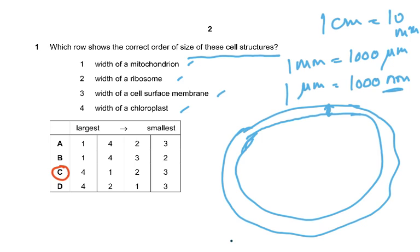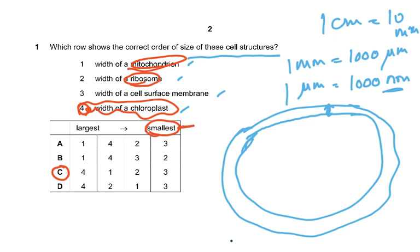The answer is C because the chloroplast is the biggest, then the mitochondrion, then the ribosome, and the cell membrane is the smallest in width. So cell membrane width was the smallest — that is what made this a challenging question. Now that you've figured it out, if it comes in the exam you'll be able to do it.